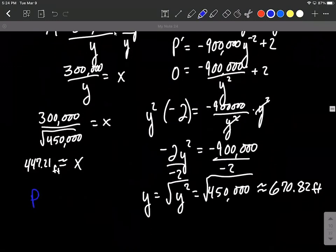So to finish this up, we'll plug it back in. We have p equals 3x. So 3 times 300,000 divided by the square root of 450,000 plus 2 times the square root of 450,000.